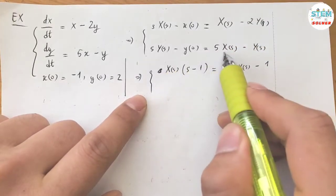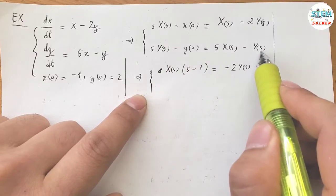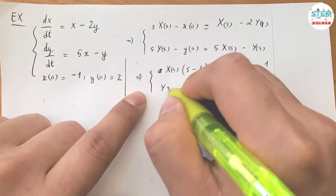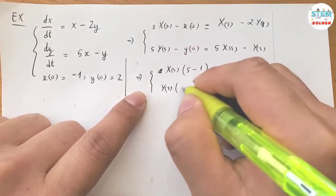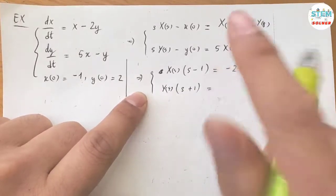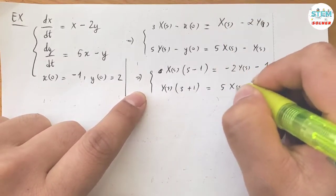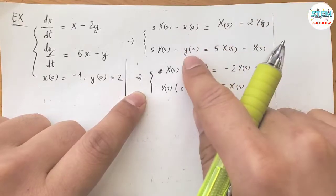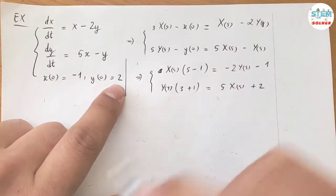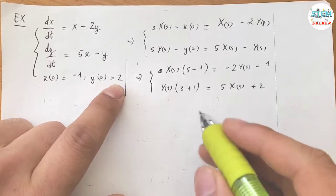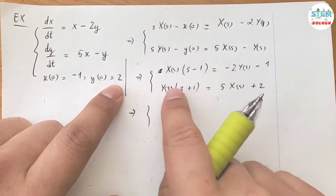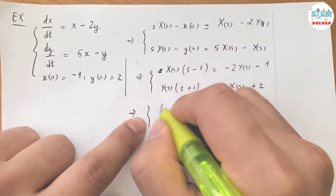Down here, collect Y(s) terms and move them to one side and factor out. I get (s plus 1)·Y(s) equals 5·X(s), and since y(0) equals 2, I have positive 2 on the right.